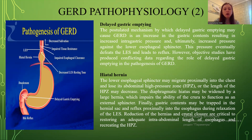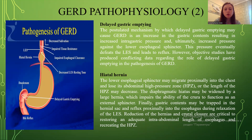The next factor is hiatal hernia. The lower esophageal sphincter may migrate proximally into the chest and lose its abdominal high-pressure zone, or the length of the high-pressure zone may decrease. The diaphragmatic hiatus may be widened by a large hernia, which impairs the ability of the crura to function as an external sphincter. Gastric content may be trapped in the hernia sac and reflux proximally into the esophagus during relaxation of the lower esophageal sphincter. Reduction of the hernia and crural closure are critical to restoring an adequate intra-abdominal length of esophagus and recreating the high-pressure zone.